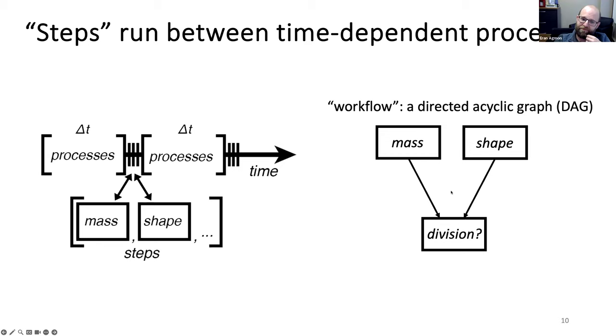We can also use these steps in the workflow. Here, I'm showing a workflow. There's a directed acyclic graph of dependencies. So mass and shape in this case run in parallel. They don't depend on each other, but division requires both of them to have run before it determines whether it's time to divide. So we can actually do, this is a very flexible framework that lets us do a lot of things. If we get dependencies figured out, we can run entirely non temporal simulations using only steps in a workflow.